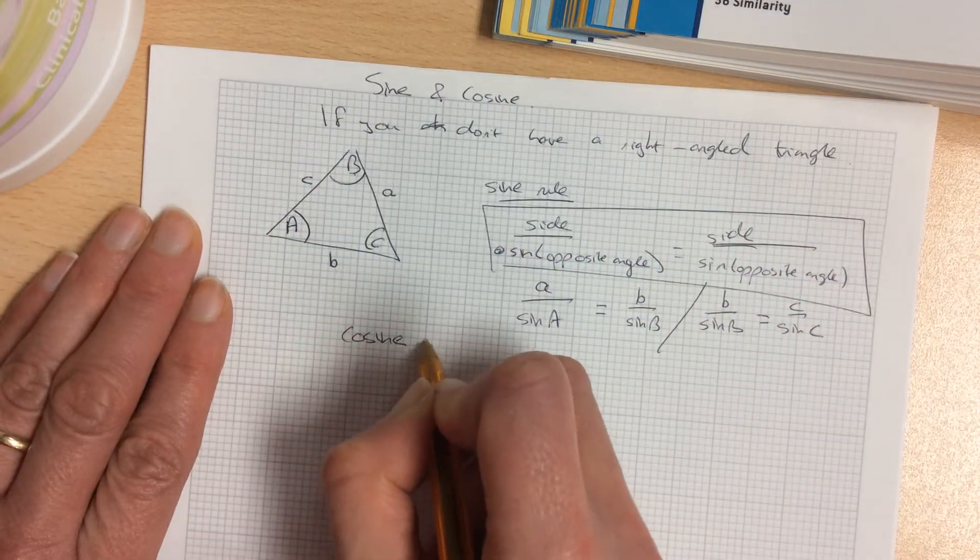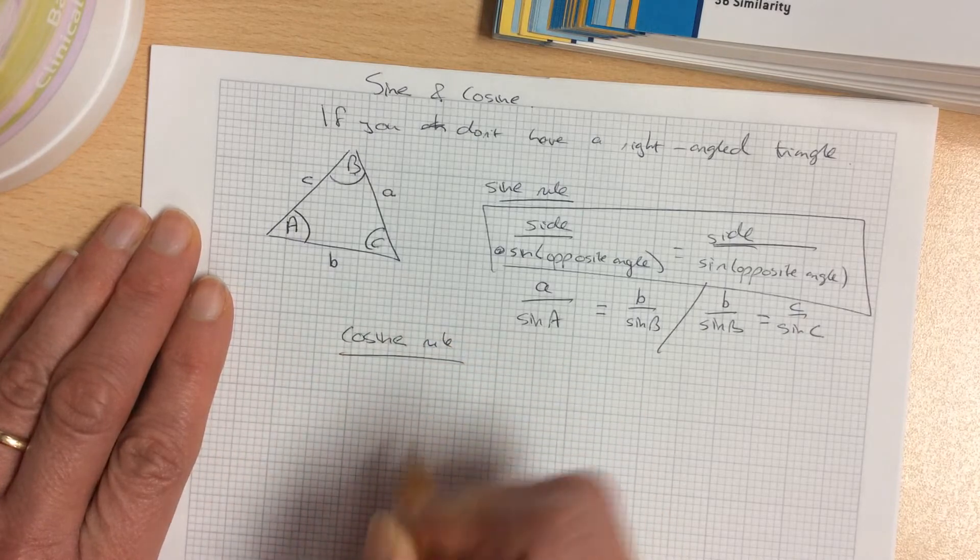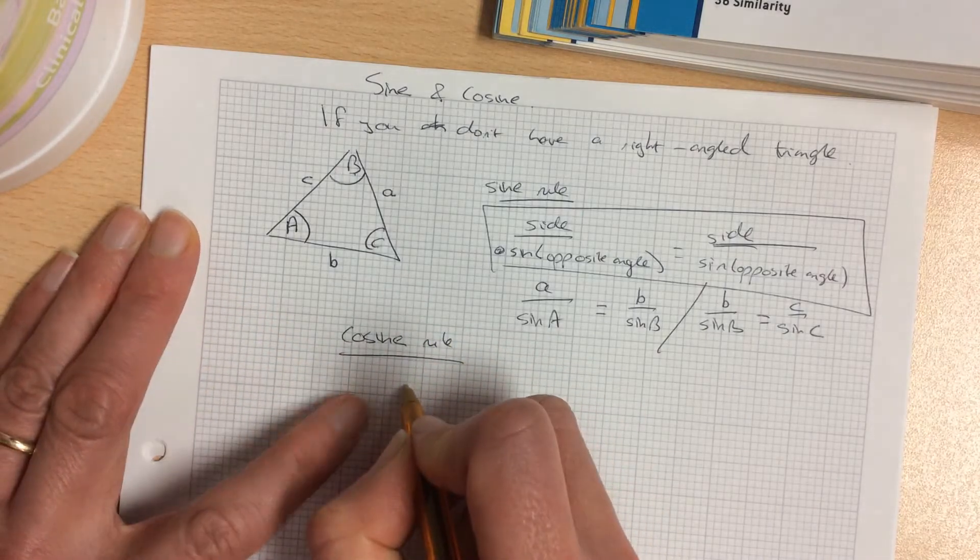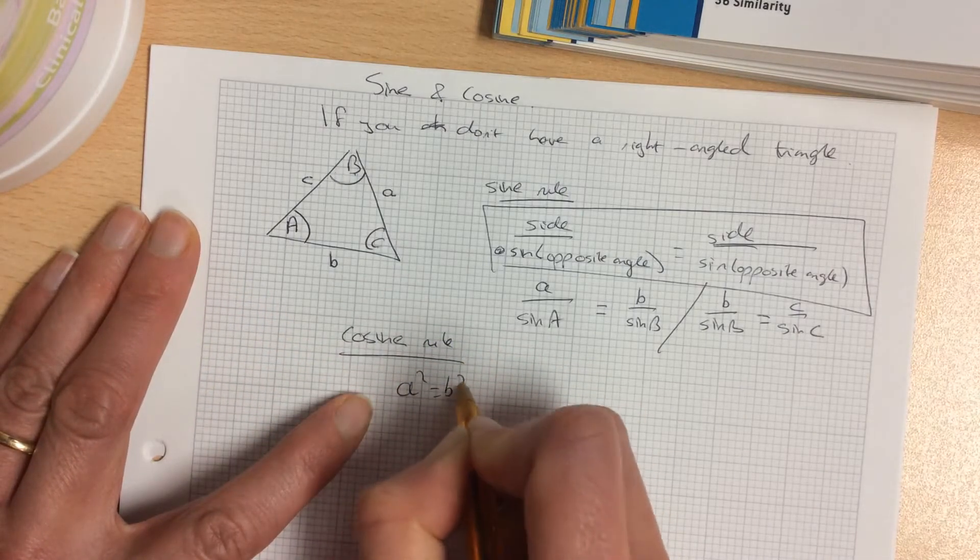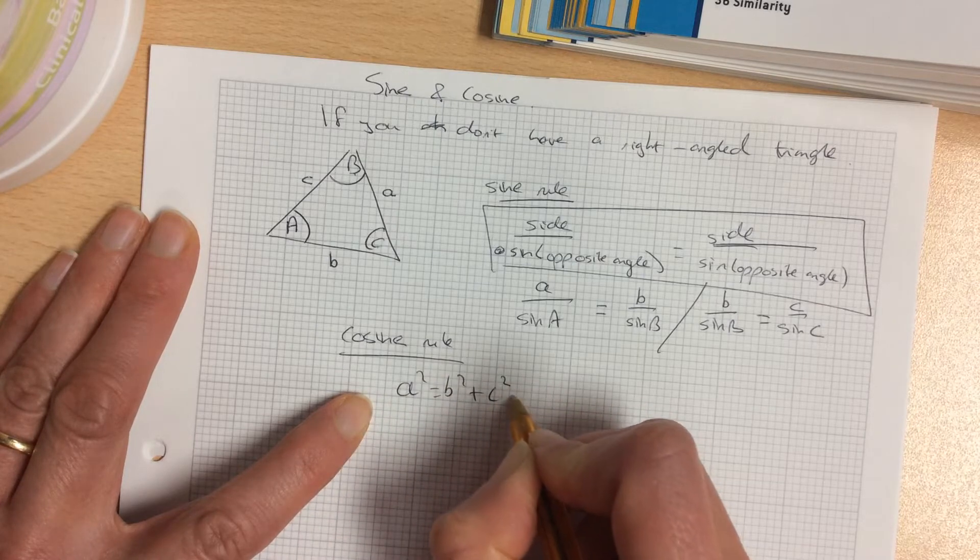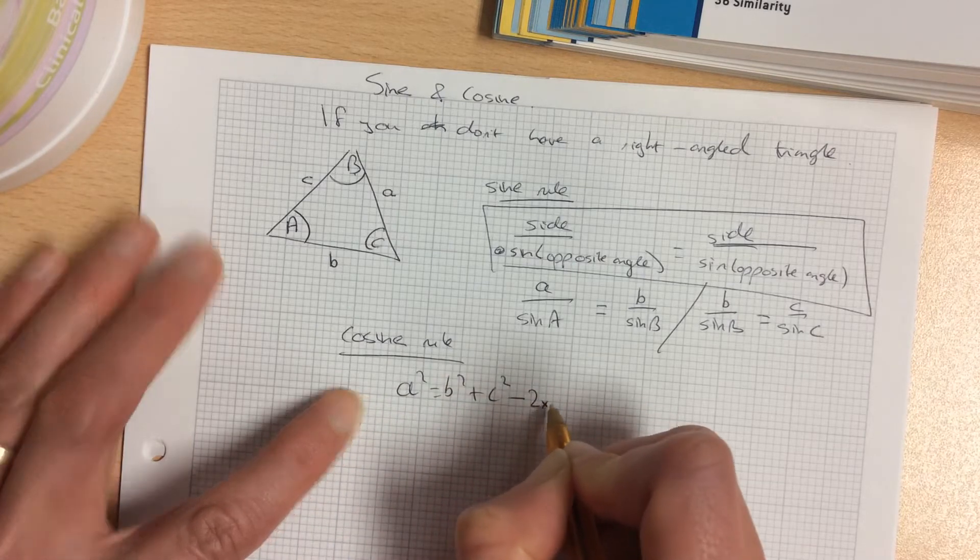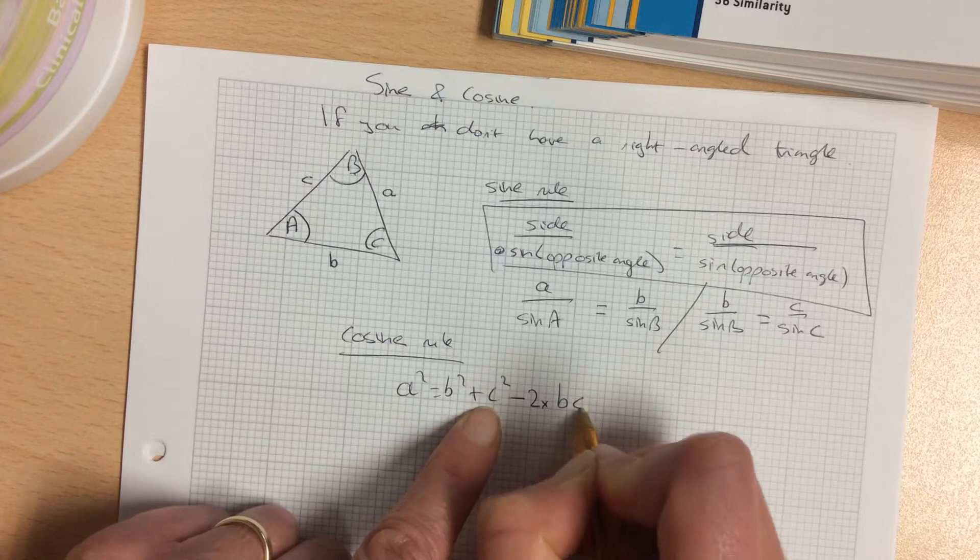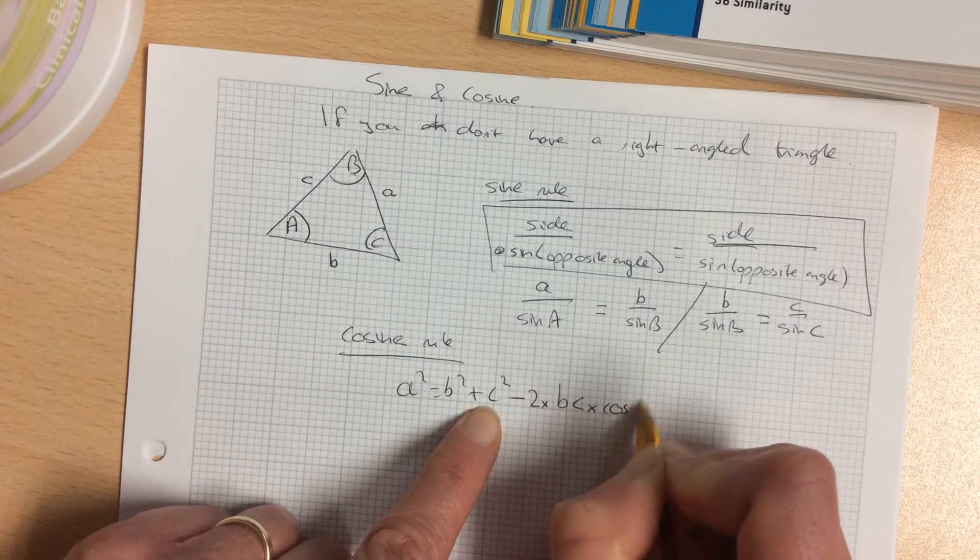You then have the cosine rule. The cosine rule starts off a bit like Pythagoras. So it goes a squared equals b squared plus c squared, then it's minus 2bc times cosine A.